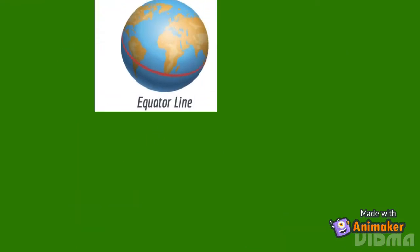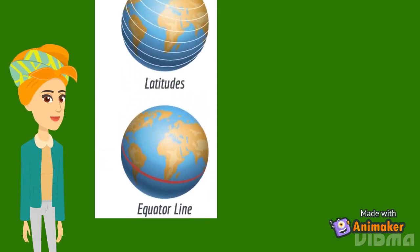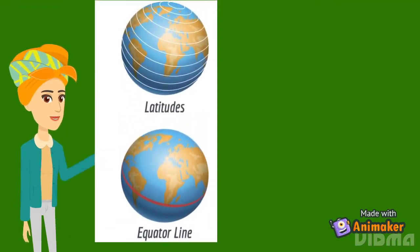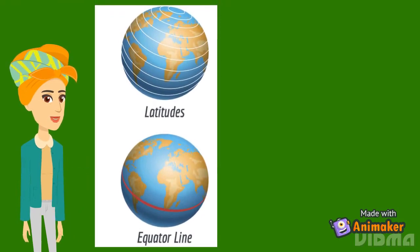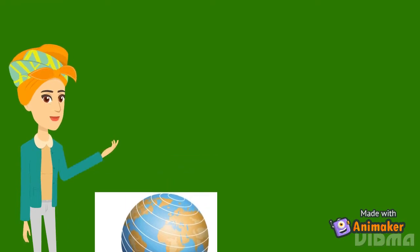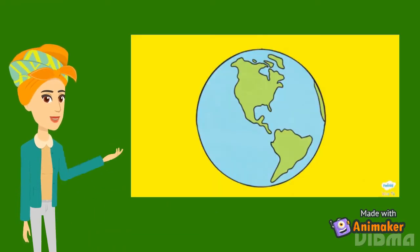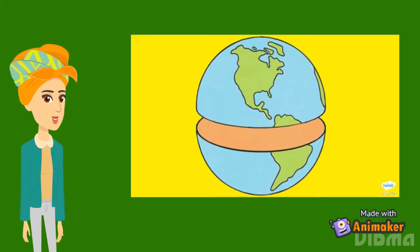Latitudes are imaginary lines carved on the globe that run from east to west and they are parallel to the longest latitude that is the equator. Can you all see in the second picture there is a red line drawn that is the middle latitude known as the equator. The equator divides the globe or the Earth into two parts, Northern Hemisphere and Southern Hemisphere.